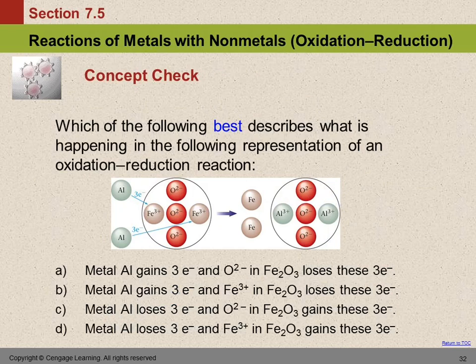Which of the following best describes what happens in this representation of an oxidation reduction reaction? So let's talk about what's going on here. Here we have aluminum atoms, and they are reacting with this ionic compound with iron 3+ ions and oxide ions. The little arrow is showing us that the aluminum is giving three electrons to the iron.